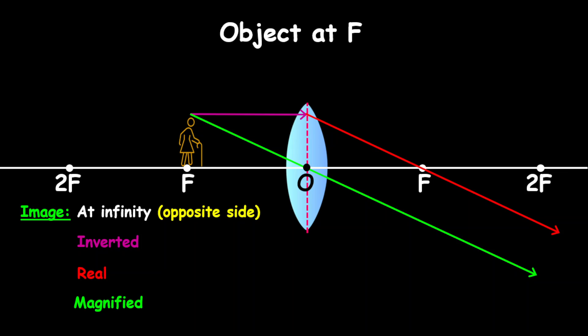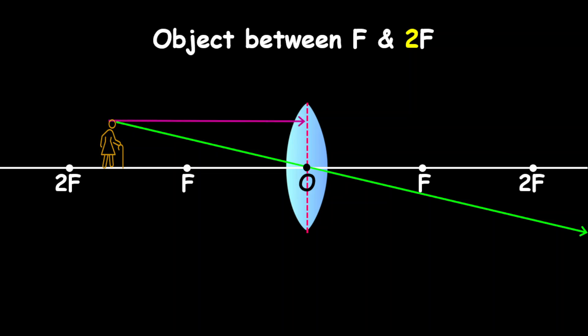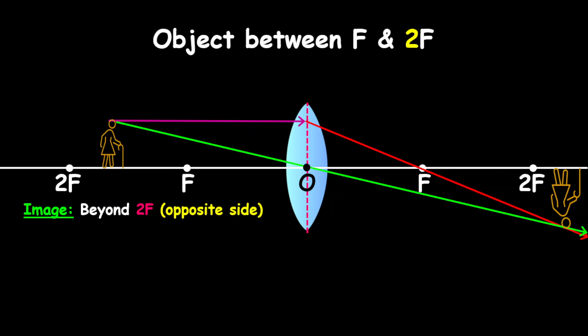Now let's look at the object between F and 2F. Again, we draw our unrefracted ray through the optical center, then our parallel incident ray which is refracted through F. Notice where they meet — they meet just behind 2F. So the image is beyond 2F, on the opposite side of the lens compared to the object, definitely inverted, real, and because the image is further away from the lens compared to the object, it is magnified.